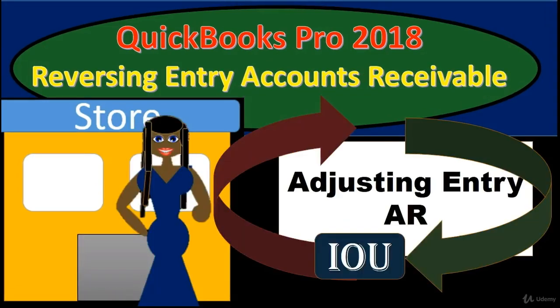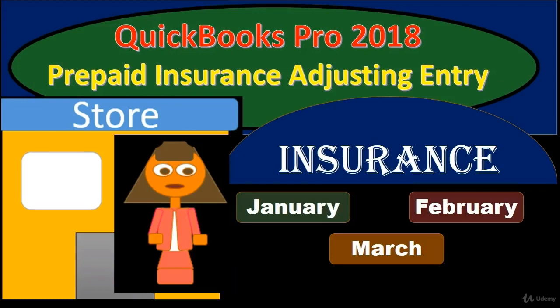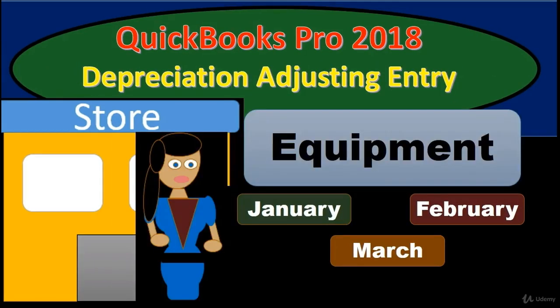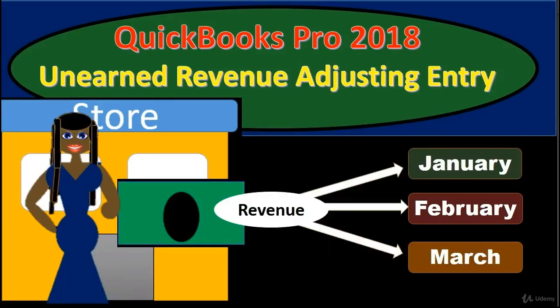Reversing entries for accounts receivable follow the same concept — we will reverse our adjusting entry as of the first day of the next month. Then we have the prepaid insurance adjusting entry, a standard type of entry to record the amount of insurance consumed over the time period. We have the depreciation adjusting entry, which records the deterioration of equipment — or the allocation of its cost to the periods it was used. And we have the unearned revenue adjusting entry, which is a bit different because QuickBooks records prepayments in an accounts receivable account as a negative receivable.